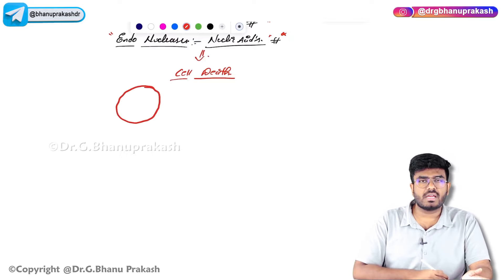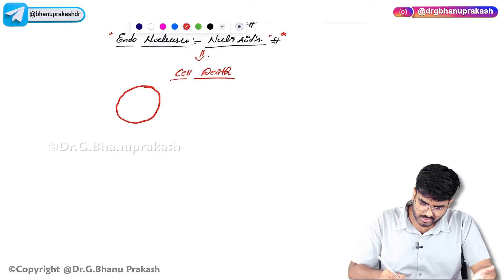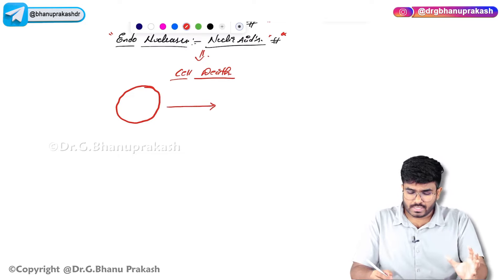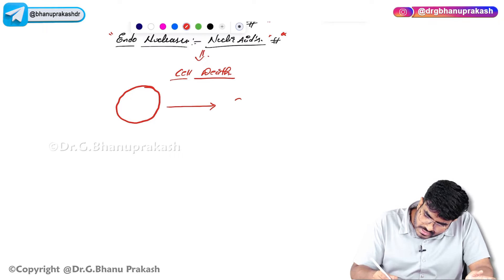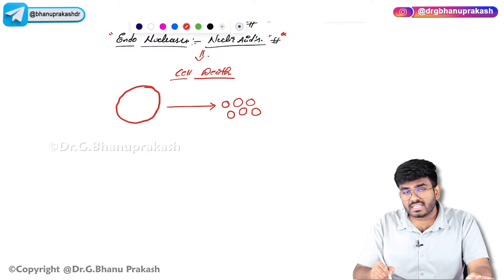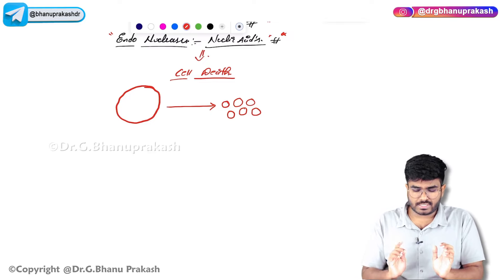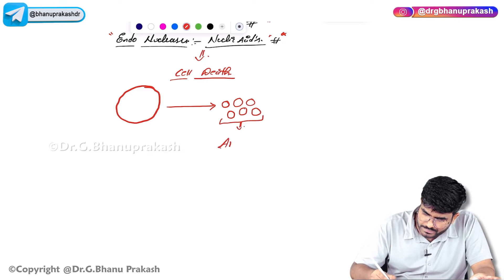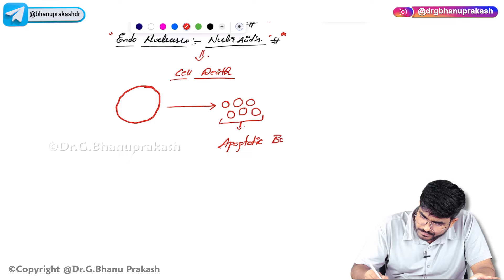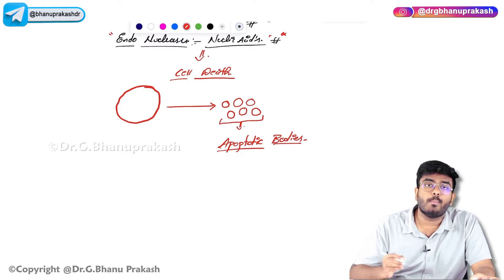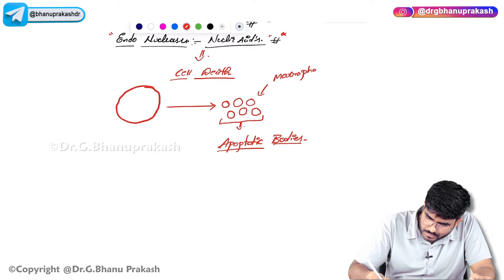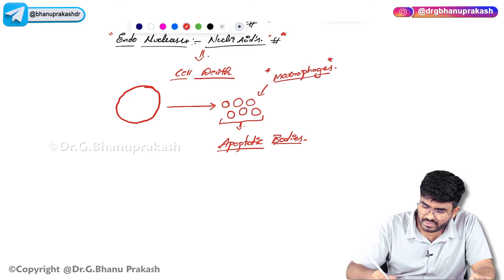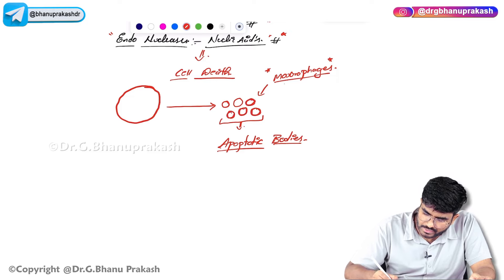A big cell undergoing apoptosis commits suicide and gets smaller and smaller — the cell is getting shrunken. In apoptosis, cell swelling does not happen; the cell shrinks into small small fragments. Please note that the cell membrane is still intact; the cells are becoming smaller in size. These bodies are called apoptotic bodies. These apoptotic bodies are cleared by macrophages, which come and recognize them.